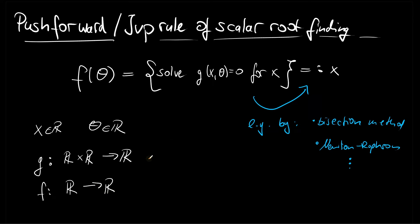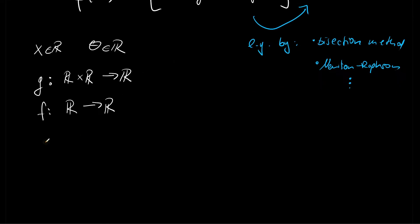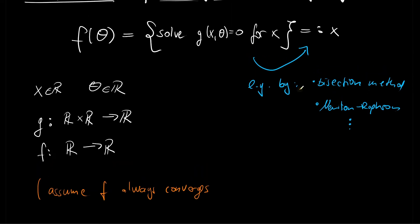And here I want to make some really strong assumption in that the function f always converges. So assume that f always converges. So we are not too interested in the technicalities of how one could implement scalar root finding algorithms, but we are rather interested in how to push forward tangent information over this solution process.